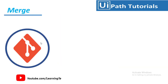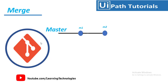Let me start with the use case. I'm having a master branch with M1 and M2 changes — that is two commits in the master branch. My team member wants to work on a feature, so from the master branch he has created a feature branch called feature one to implement feature F1. Once the team member has completed his changes, he wants to merge them into the master branch.